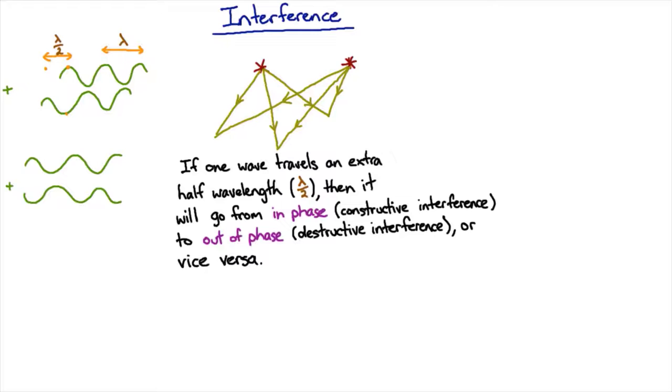When he put the slits together, he saw regions of bright and dark light cast off from that, so he could tell yes, I have an interference pattern and therefore light is a wave.